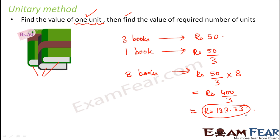This method is called the unitary method, where you first find out the value for one unit and then find the value for the required number of units. If you remember, while we were discussing proportion, this is the same concept we had used — like when dividing rupees 50 between two sisters in the ratio of 2:3. In those kinds of problems, we were making use of this basic concept.